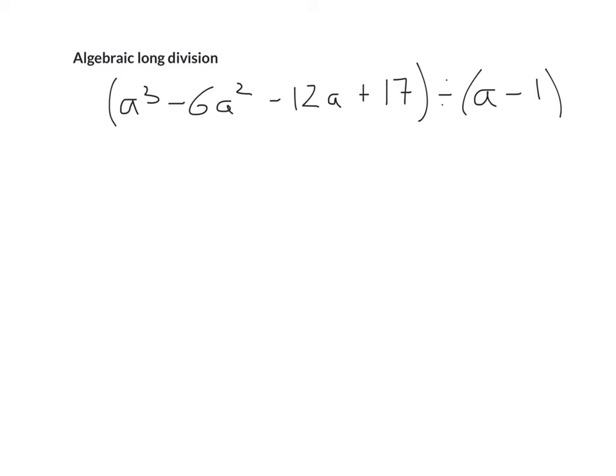So let's get straight into this question. So this is probably how it's going to come up on the junior cert. So the first thing you need to remember is that you want to make it look like this. So you put the thing that's dividing into the larger polynomial on the outside and then we've got a³ - 6a² - 12a + 17.